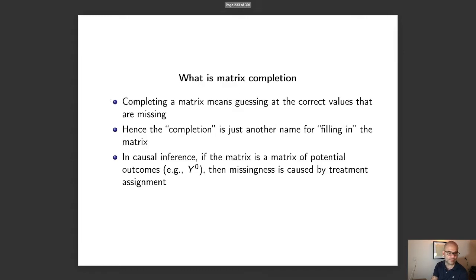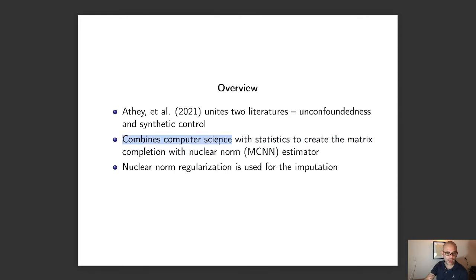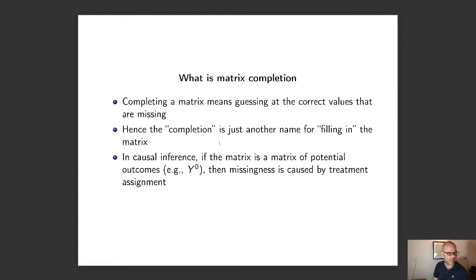Matrix completion was not invented by these authors — it came from computer scientists. Completing a matrix is basically about imputing: filling in the correct values that are missing. In causal inference, if the matrix is a matrix of potential outcomes like Y0, missingness is due to counterfactuals. Y0 is missing for treated units because you can't observe their untreated outcome.